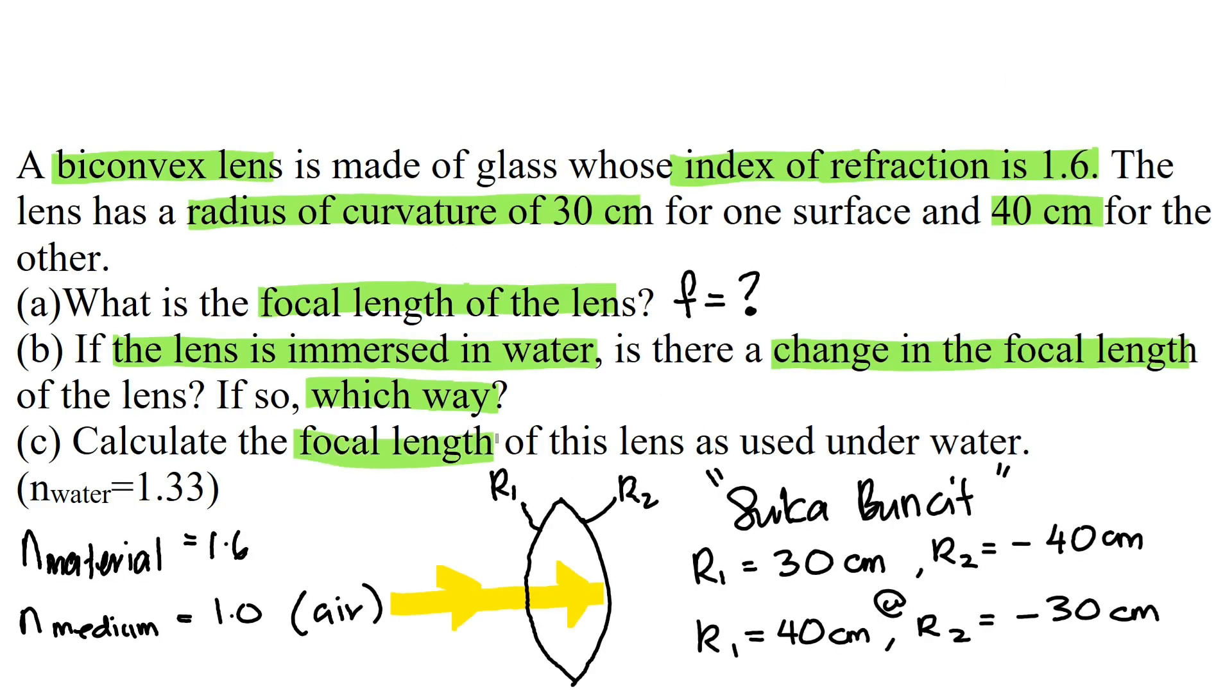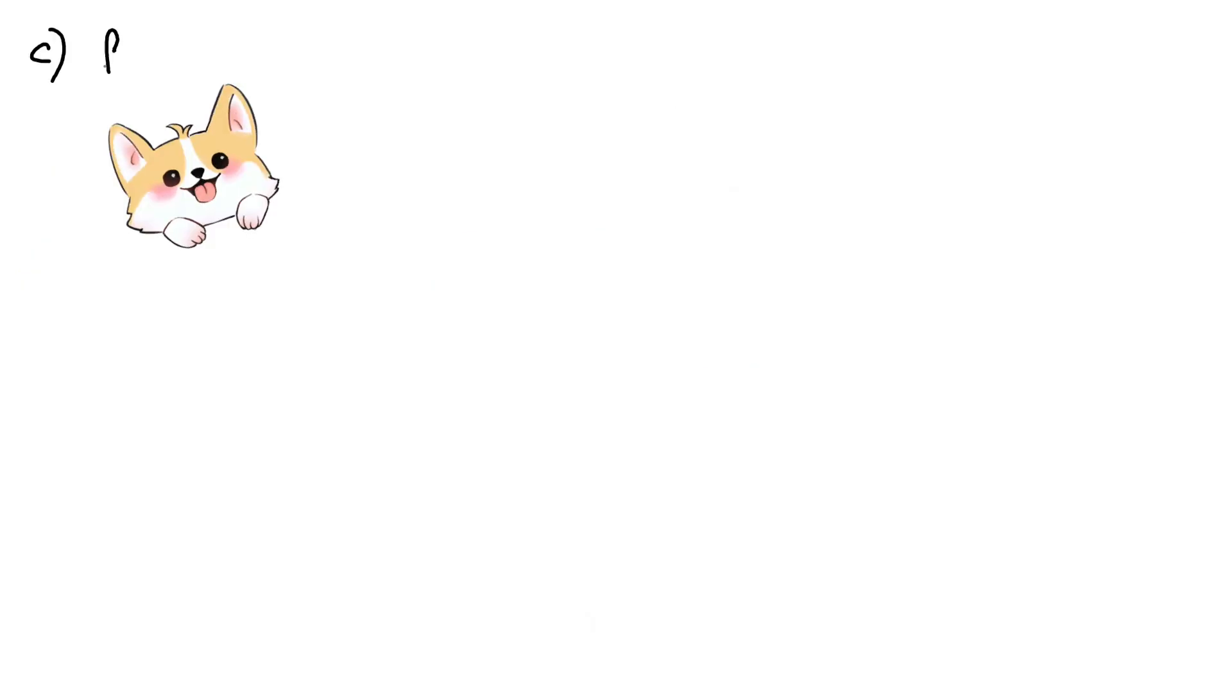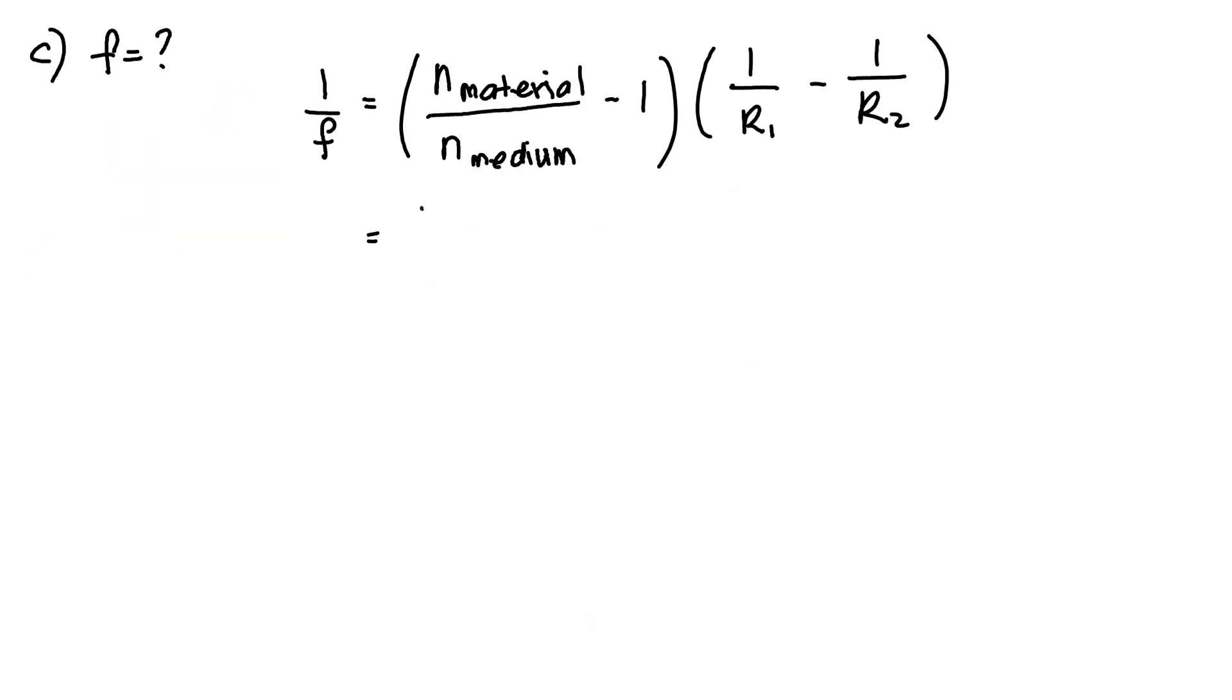Question C. Now let's find the focal length when the lens is in the water. Again, we're going to use the lens maker's equation. The rest are the same except for the n medium. We're going to change it to 1.33, which is the refractive index of the water. And our new focal length is 84.46 cm.